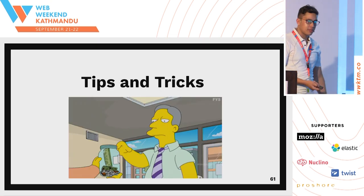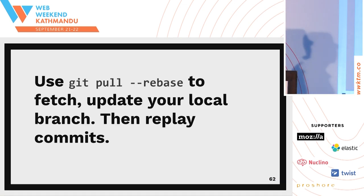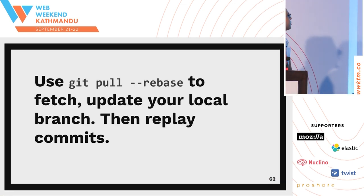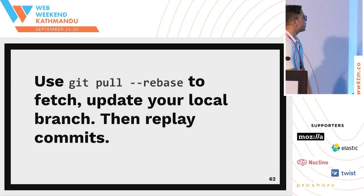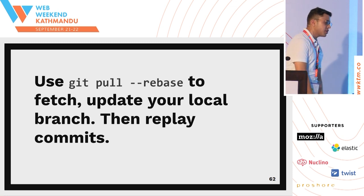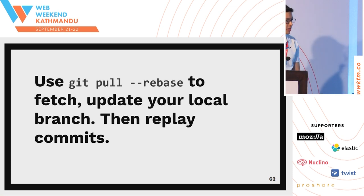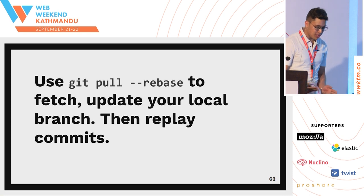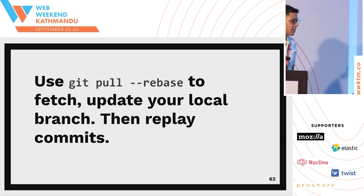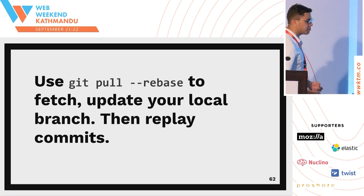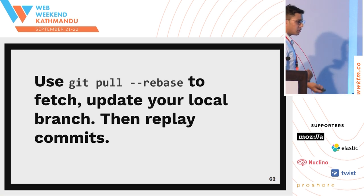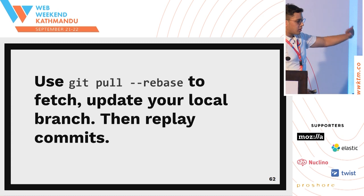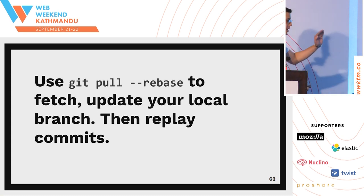Tips and tricks: always use git pull --rebase to just fetch and update your local branch. If your branch has diverged somewhat from the base branch, use this command and it will pull from the master branch — you won't have a merge commit, but your commits will align to the top of your branch.